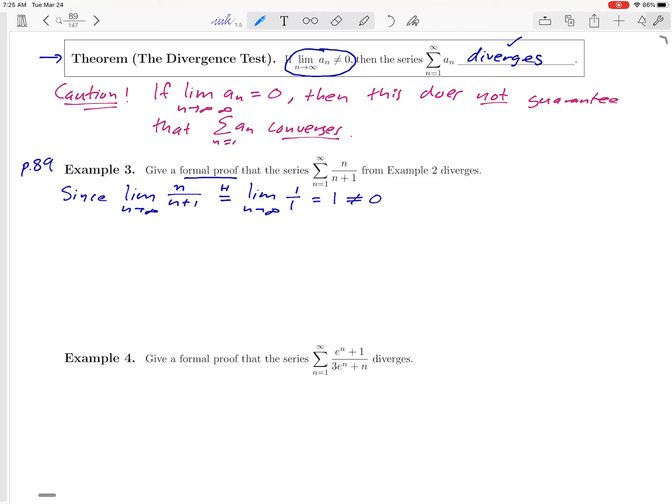And then notice that that 1 is not equal to 0. So we have established the if part of the divergence test theorem. And therefore, we can conclude that the series diverges: the series n over n plus 1 diverges by the divergence test.